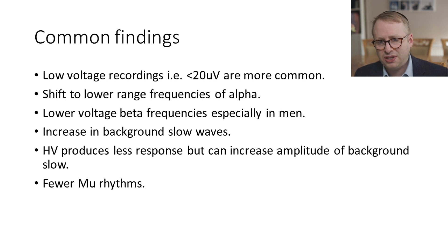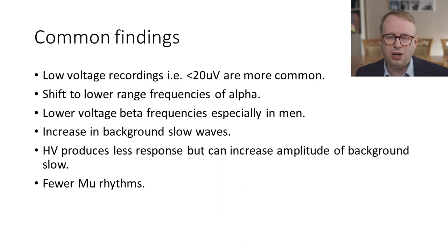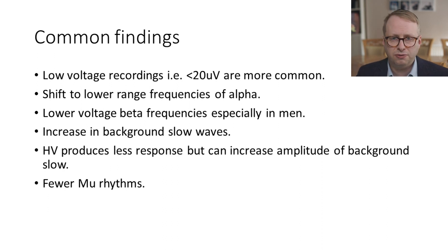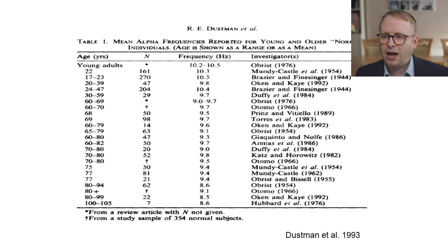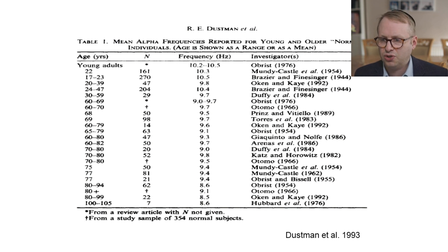So what are the common findings that we see? Generally speaking, the amplitude of the records becomes smaller. There's a shift to the lower range of frequencies of alpha. Beta becomes lower voltage as well. There's an increase in background slower activities. The effects of hyperventilation become less marked, and there are fewer mu rhythms. And in this lovely series of studies compiled by Dussman, you can see that the mean frequency goes from about 10.5 down to 8.5 over the different decades illustrated.